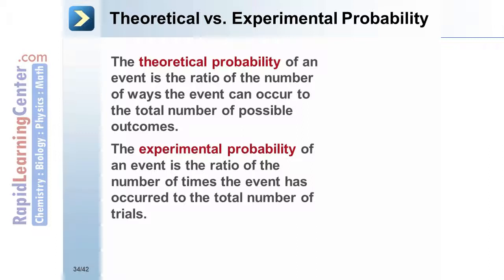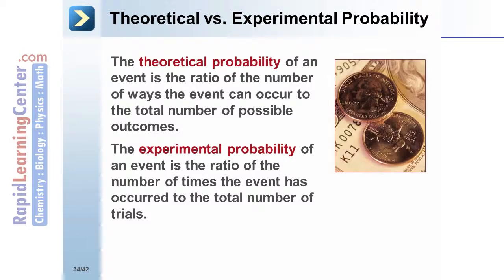For example, the theoretical probability of a coin landing on heads is 50%. However, the experimental probability depends on the results of actual trials.